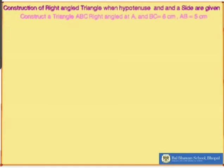Let us take an example to construct a triangle ABC right-angled at A, where BC is given as 6 cm and AB is given as 5 cm. Children, here two sides and one angle are given, and that angle is a right angle.